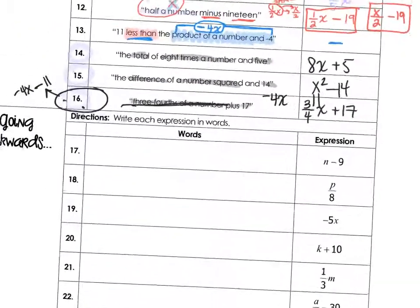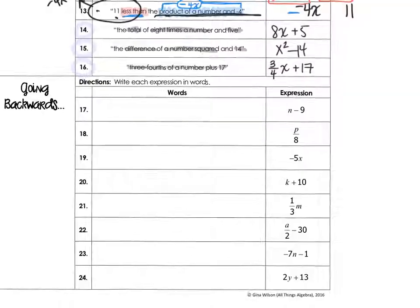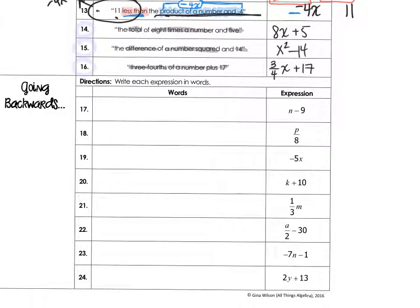For 17 through 24, what you'll be doing is writing your own expression in words. So you'll use the words and go backwards. I'd like you to try the odd problems. Pause the video and try them now. Use a number for the variable. Instead of saying whatever n, say a number.